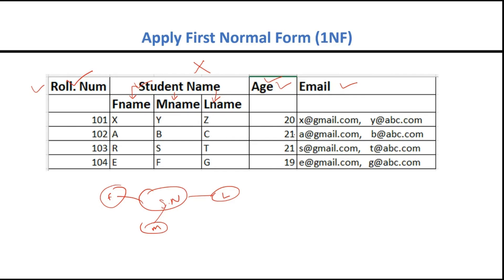For every student, there are two email accounts. In Excel, separating two values by a comma is allowed, and this is a snapshot from the Excel file — so it is allowed there. But in a relational database, that is not at all allowed. Comma is not allowed because each cell is considered a single atomic value. This is called a multi-valued attribute. So we need to remove both the composite attribute and the multi-valued attribute.